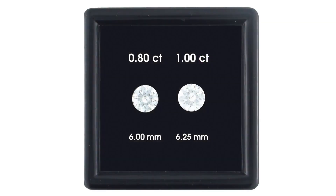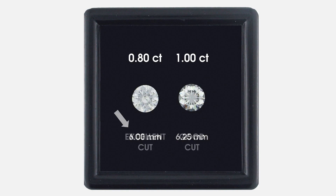For example, these stones are both bright under spotlights, but in normal lighting the 80-pointer remains bright from edge to edge while the one-carat stone doesn't. In fact, the 80-pointer now appears visually larger than the one-carat stone, even though it is physically smaller. The difference is cut quality.